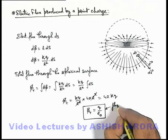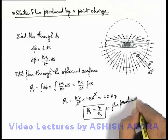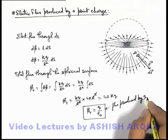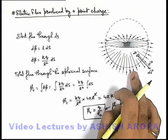That means this is the total flux originated by the charge q. This is the flux produced by q, as it is surrounded by the spherical surface.